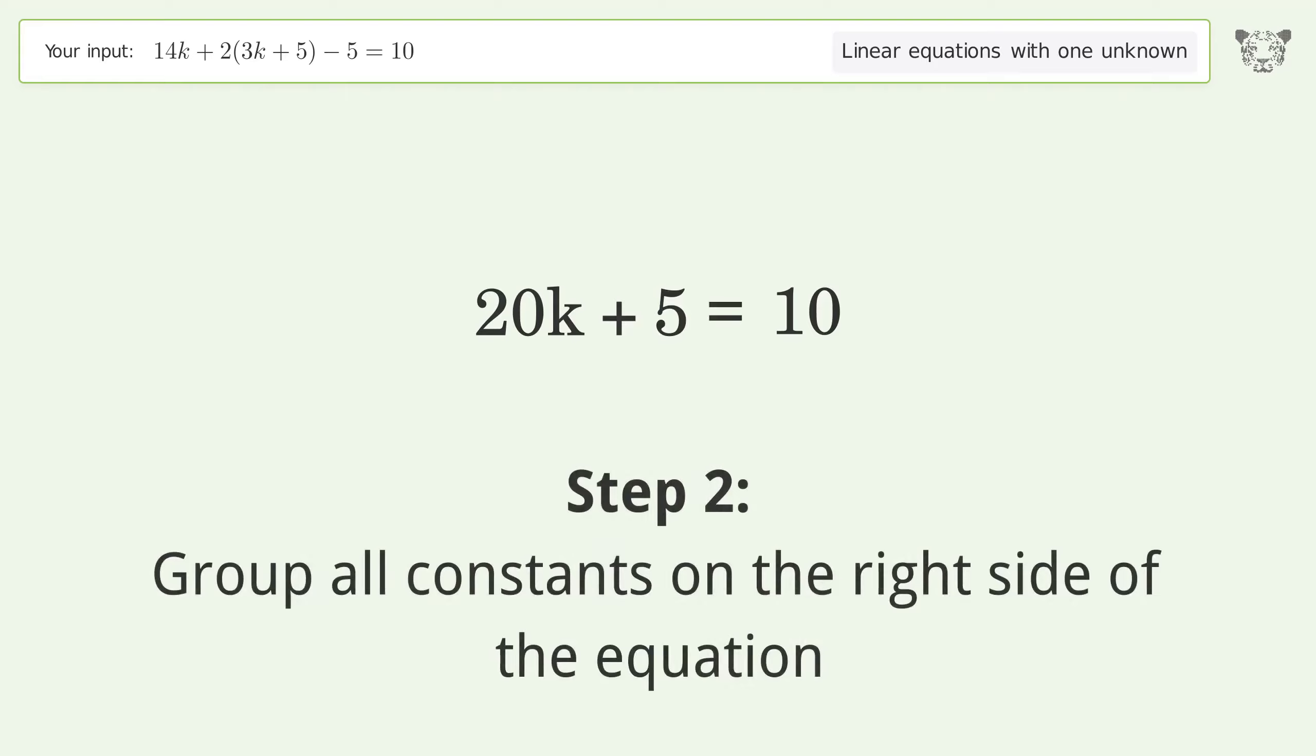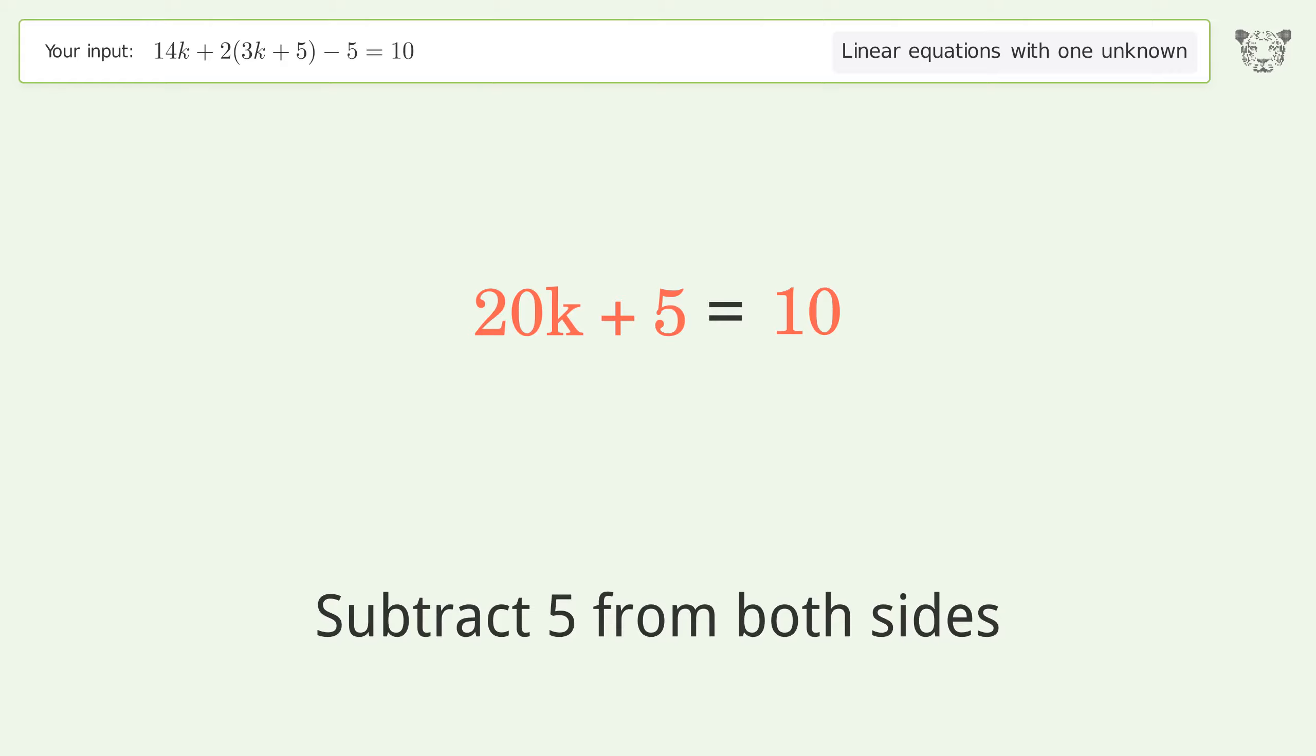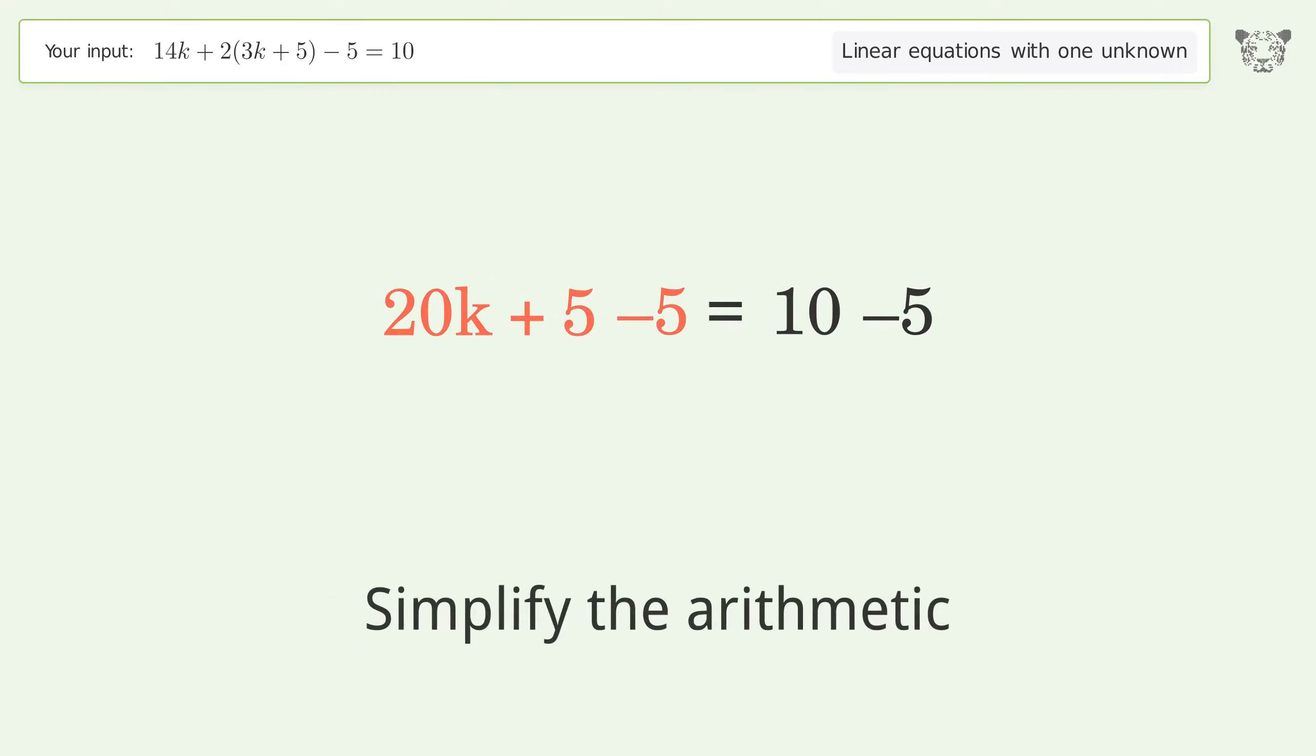Group all constants on the right side of the equation. Subtract 5 from both sides. Simplify the arithmetic.